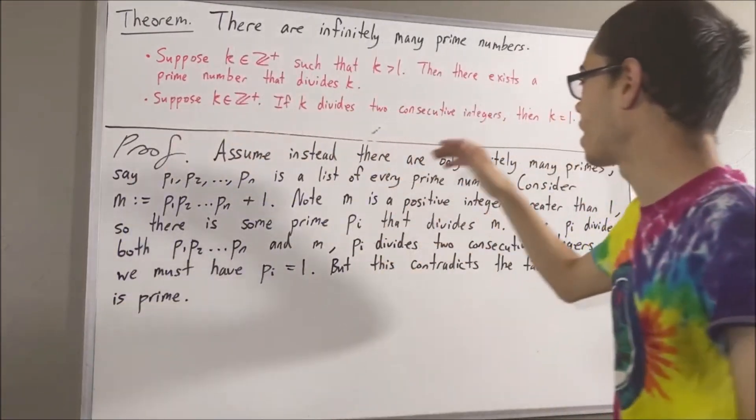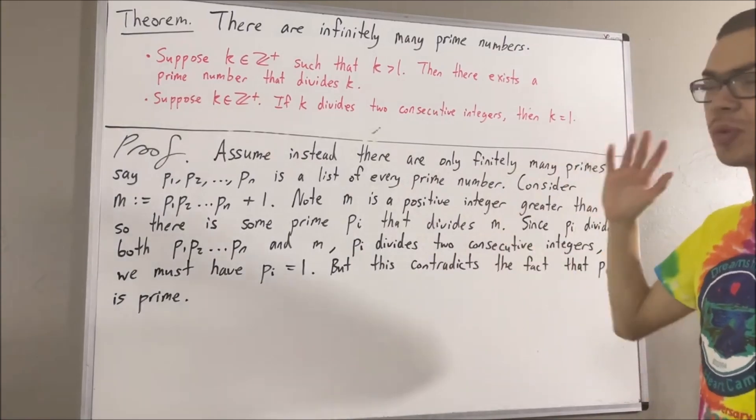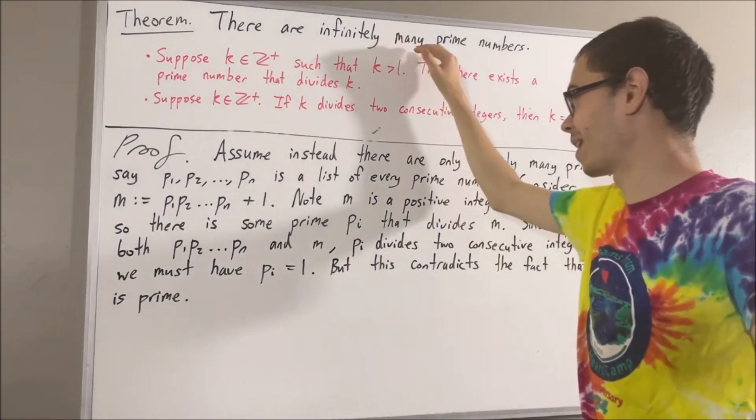Our assumption that there are only finitely many prime numbers led us to a contradiction. So we must instead have that there are infinitely many prime numbers.